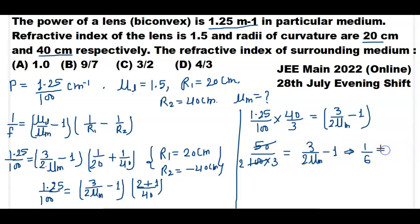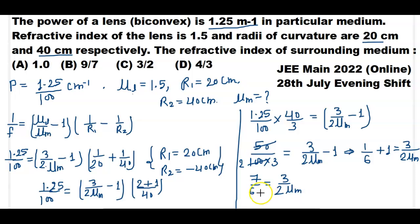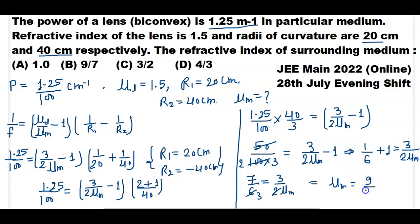Transferring minus 1 to the other side, it becomes plus 1. Adding: 1/6 plus 1 gives 7/6. So 7/6 equals (3/2) into refractive index of medium. Cancelling 6 with 2 gives 3 times. Transferring, μm equals 7 divided by (3 times... wait) — μm = 9/7. That is our final answer.